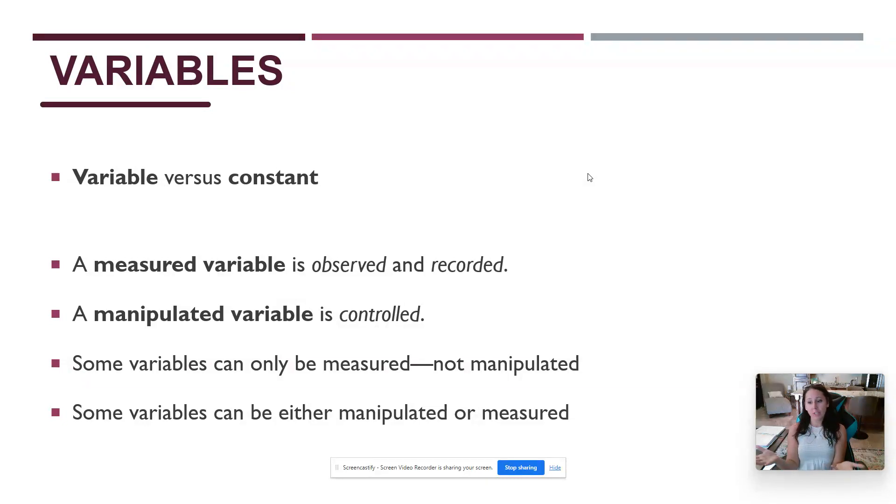Now some variables can only be measured, not manipulated. In that first example of number of children, I can't change that. I can't say, well, for the purposes of this study, you actually have three kids because you're going to become a foster parent and you're going to do this, right? It's not feasible. So all I'm doing is measuring it. Same thing with income. I can't change your income level as the researcher for a research study. I could have you hypothesize about how would your budget change if your money was different, but I can't actually change your income level.